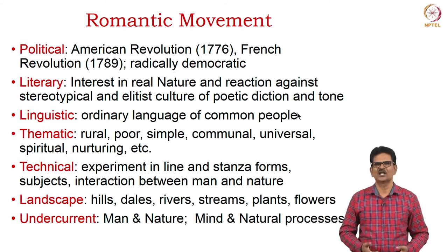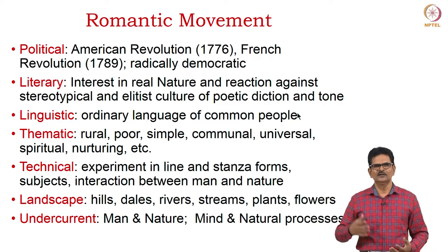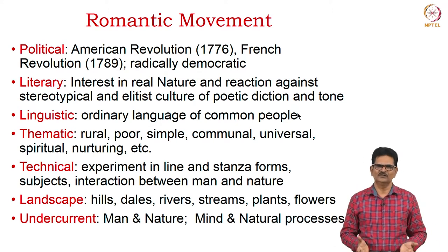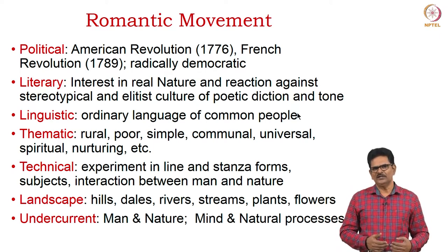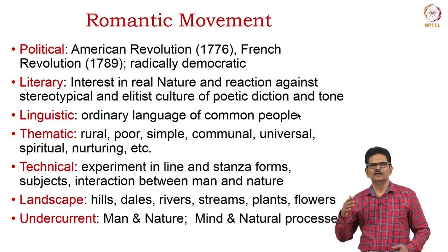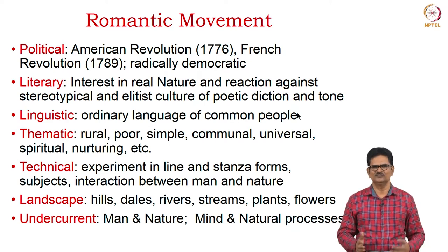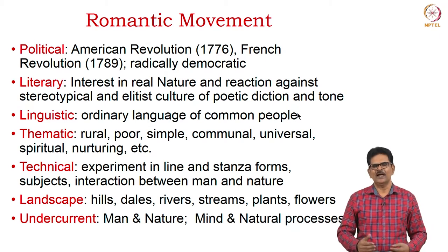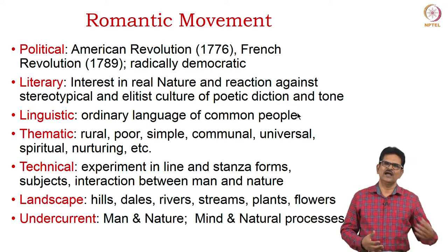In language, they chose to write about common people in ordinary language. When it comes to themes, they chose subjects from rural poor areas, simple people living in community or common areas, and they were also thinking about people's relation to spirituality and the ability of nature to nurture them in an environment of universal peace. Technically, poets were experimenting in line and stanza forms in their interaction between man and nature. They brought in lots of landscape — hills, dales, rivers, streams, plants, flowers. The major undercurrent is the relationship between man and nature and the interaction between mind and natural processes, noticing close resemblance between what happens in nature and in their own minds.